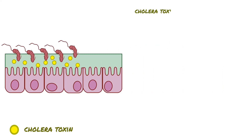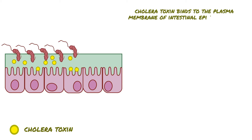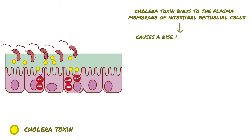This toxin binds to the plasma membrane of intestinal epithelial cells and releases an enzymatically active subunit that causes a rise in cyclic adenosine monophosphate, or cAMP, production.